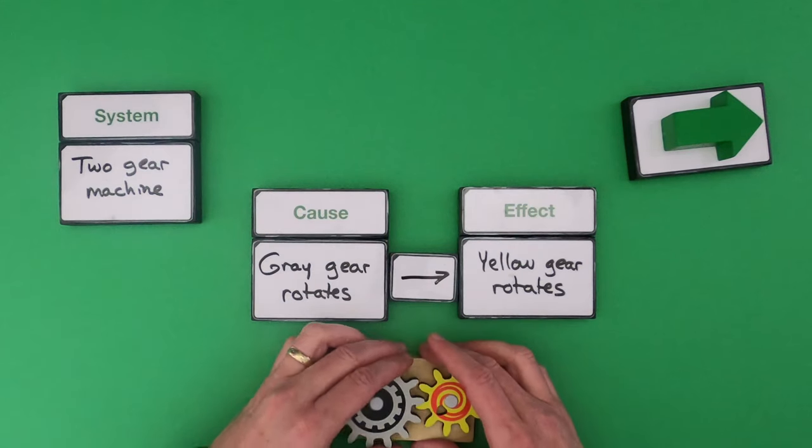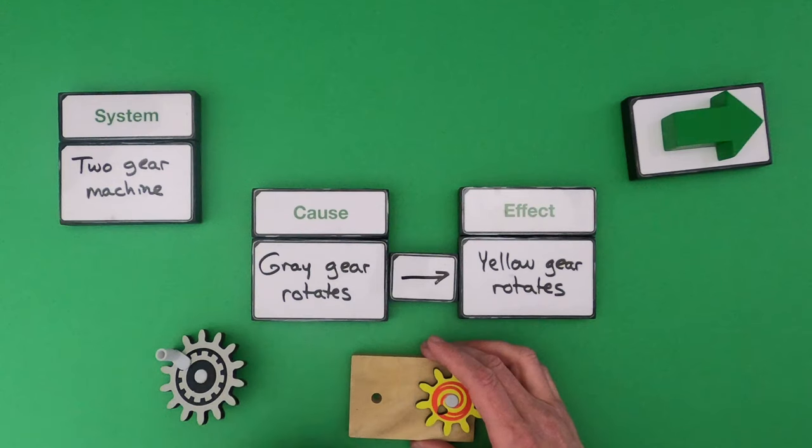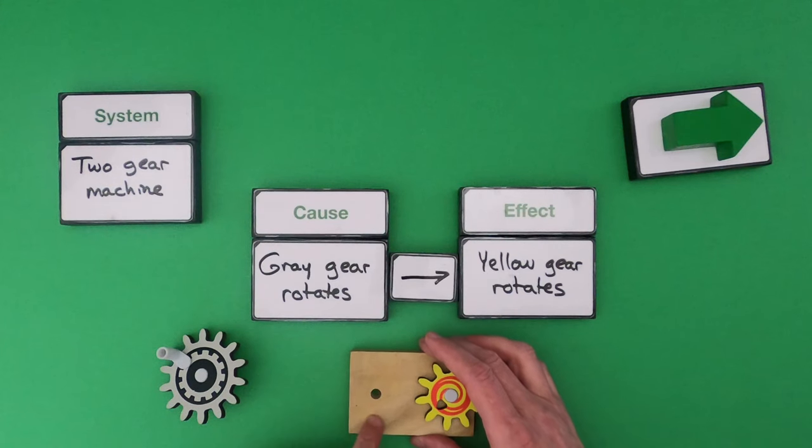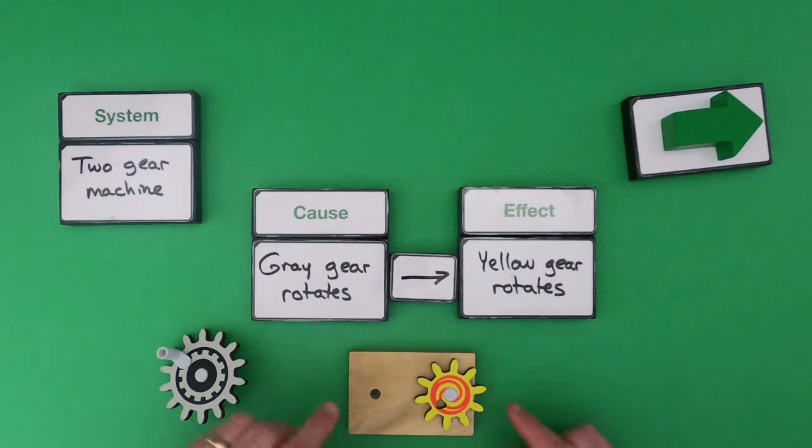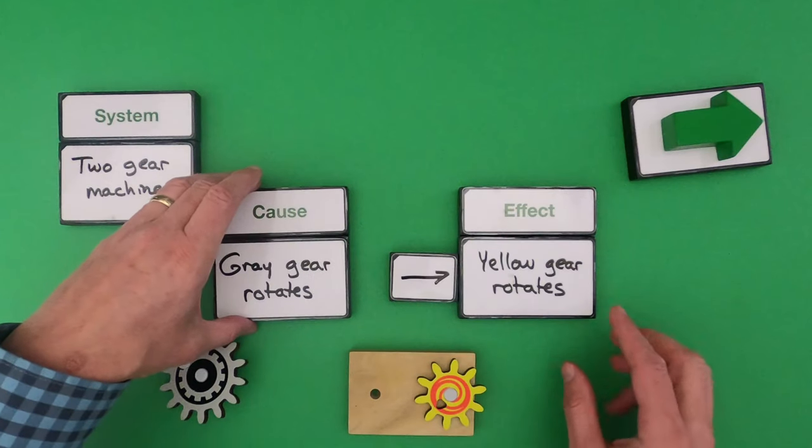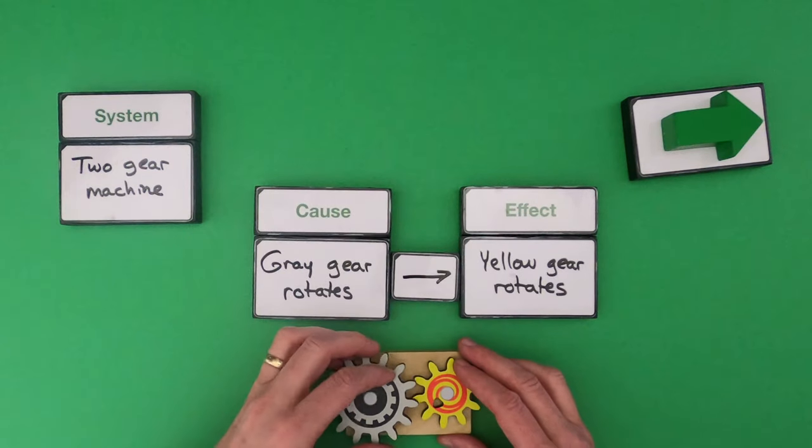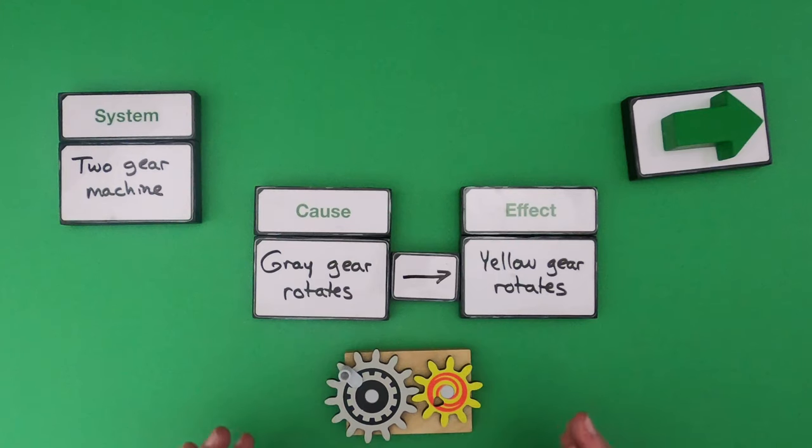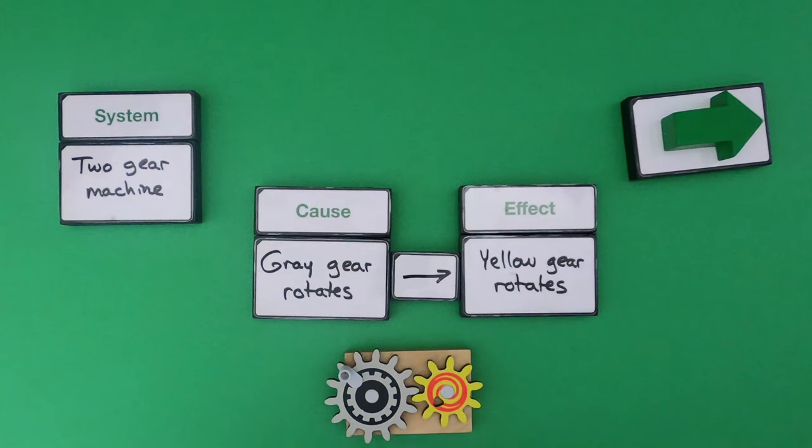I could test that if I remove the gray gear. I'm trying to move the gray gear and the yellow gear is not moving. So by removing that cause I'm not getting the effect. And so this is pretty simple but know in science lots of times we have to see what happens, that's the effect, and then work backwards for the cause.